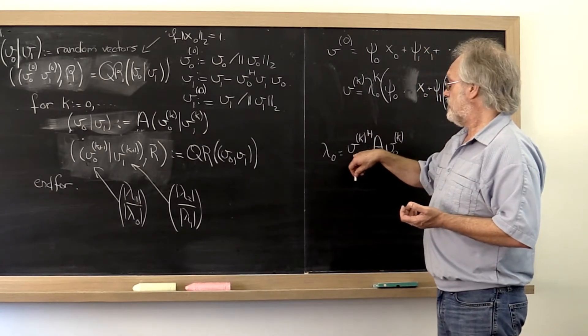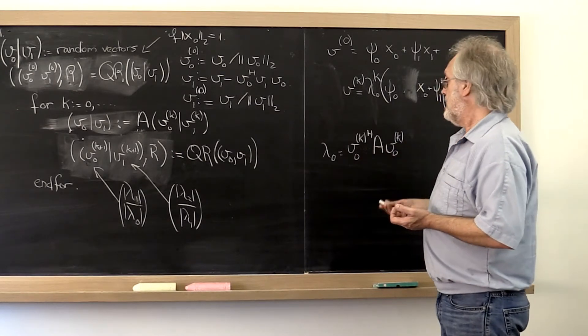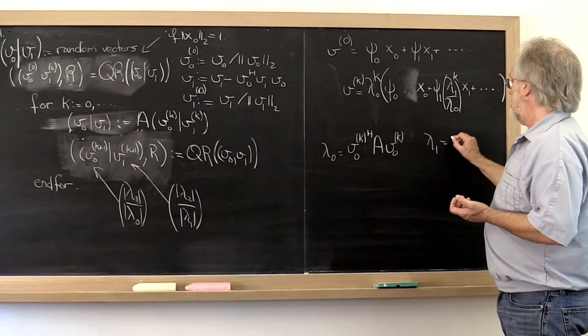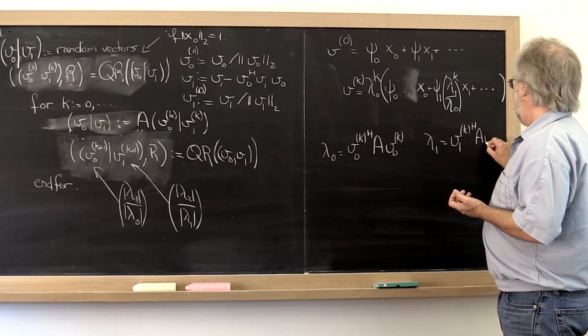Notice that we were forcing these vectors to be of length one, so we don't need to divide. And then lambda one you would get by looking at v one k Hermitian A v one k.